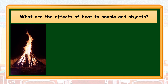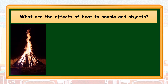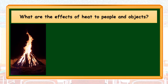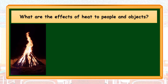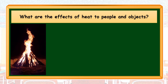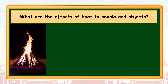From our previous lesson, we know that heat is a form of energy that is transferred between bodies or objects with different temperatures. But what are the possible effects of heat to us and to the objects in contact with it? Let's find out. I divided the effects of heat into two: the good effects and the bad effects. Let's discuss first the good effects.